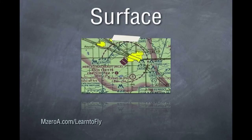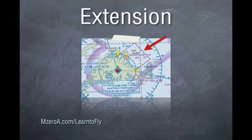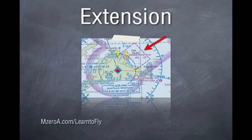So it's Class Echo all the way down to the surface. Next is a Class Echo extension. This, in this case, is extending off a delta to protect the instrument approach into that airport.